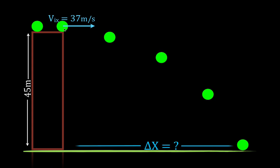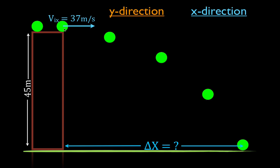We would like to know how far the object travels in the x-direction — the change in position in the x-direction. In order to understand this problem, there are a couple things you need to know. The object is moving in the x-direction and in the y-direction, and it's doing those two things separately and independently from each other. In the x-direction, the forces are balanced. There are no forces acting on the object in the x-direction, and because of that, the acceleration in the x-direction is 0 meters per second squared.